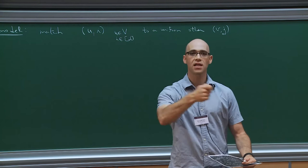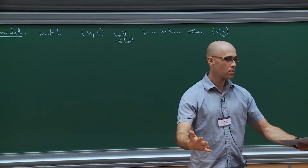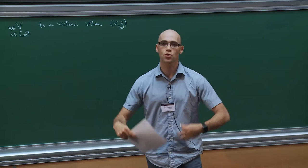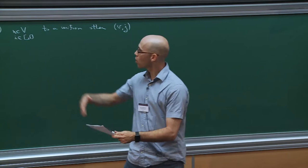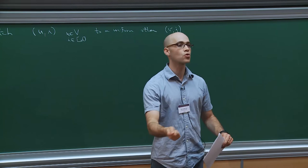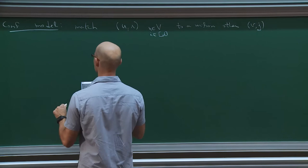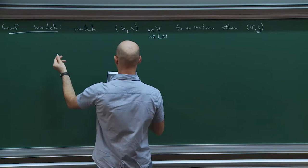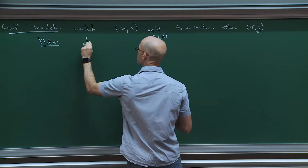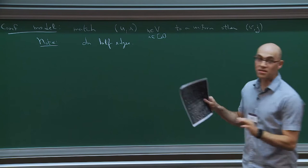We're going to expose the neighborhood of E according to the configuration model, which means matching every half edge. Each vertex U has d half edges and gets matched to a uniform other vertex-index pair (V, J). We put a perfect matching over all these half edges, then collapse everything into vertices. You can work in the multigraph model or assume the graph is simple — both use exactly the same method since you can expose these matchings as you go along.